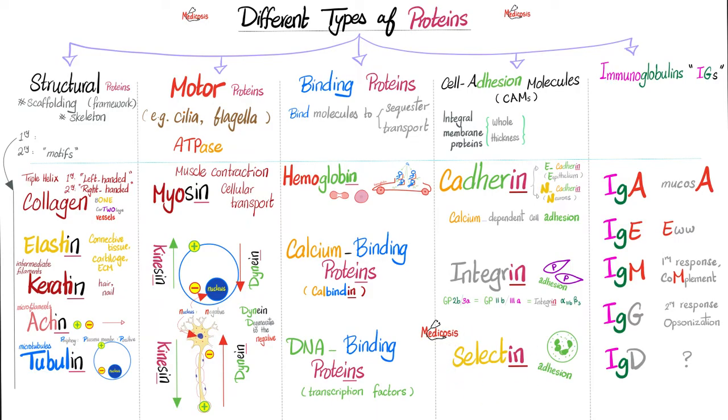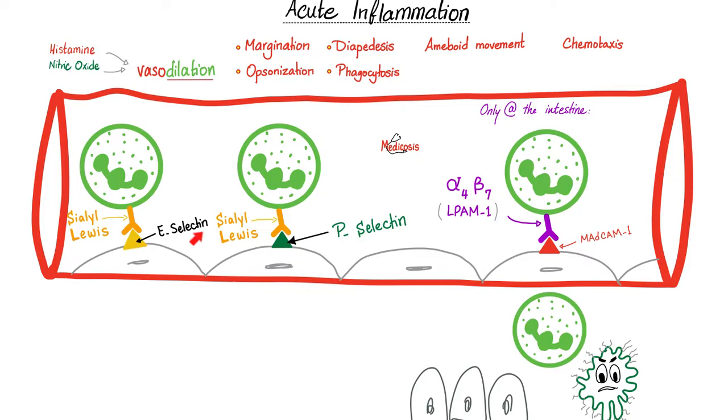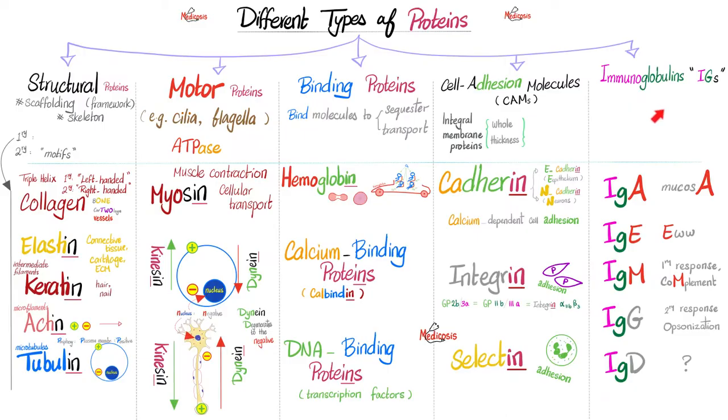Now let's talk about selectin and the adhesion of the neutrophil to your endothelium. Look at that. Here is selectin on your endothelium, which will interact with sialyl-Lewis bodies on your neutrophils. They will hug and kiss each other, and then the neutrophil will leave the blood and go to the outside to kick that bacterium in the nuts.